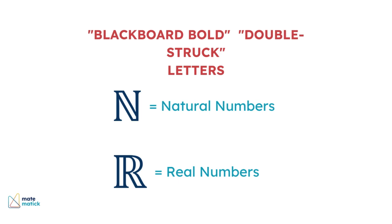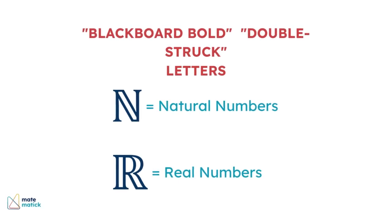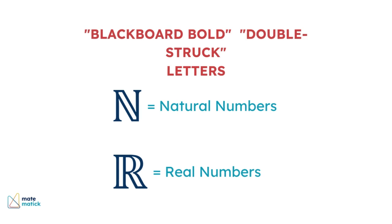One of the key figures in this adoption was David Hilbert, among others, who contributed significantly to modern algebra and number theory. Z is part of a family of symbols known as blackboard bold or double-struck letters, used to represent different sets of numbers, like N for natural numbers and R for real numbers.